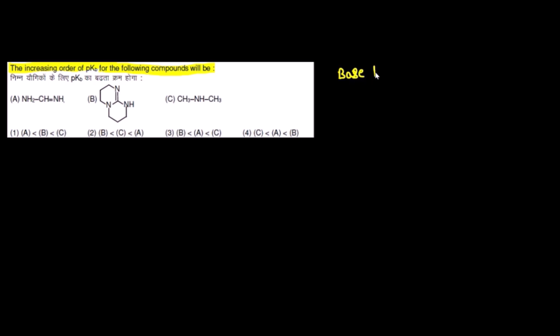A famous question asks for the increasing order of pKb of given compounds (basicity). First clarification: a better base has higher Kb, and higher Kb means lower pKb. So if we arrange basicity and then reverse the order, we get the pKb order. We need to evaluate each given molecule's basicity one by one, then reverse the order for the pKb answer.